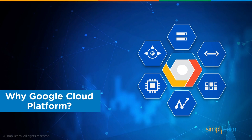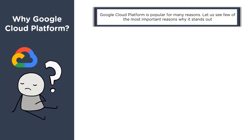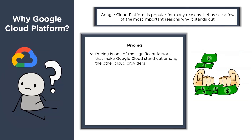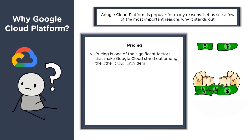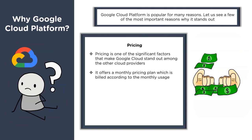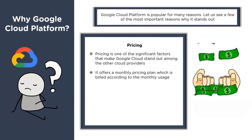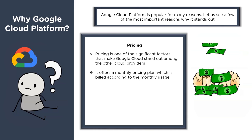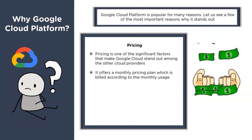Coming back to our Google Cloud Platform, let's understand why GCP is popular. Pricing is one of the significant factors that make Google Cloud stand out. It offers a monthly pricing plan billed according to usage — billing can be in hours, minutes, or even seconds. Pricing options include preemptive machines and reserved instances, all accessible from the Google Cloud web page.